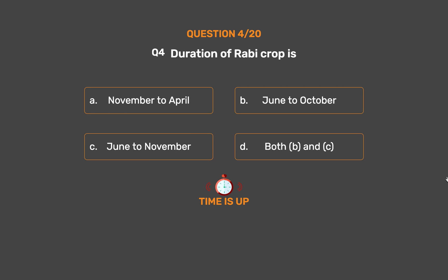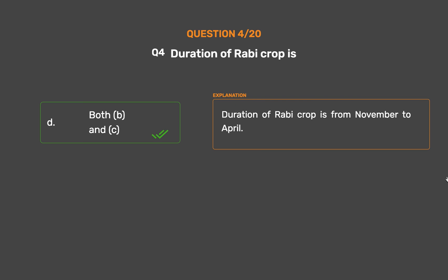The correct answer is Option D: Both B and C. Duration of Rabi crop is from November to April.